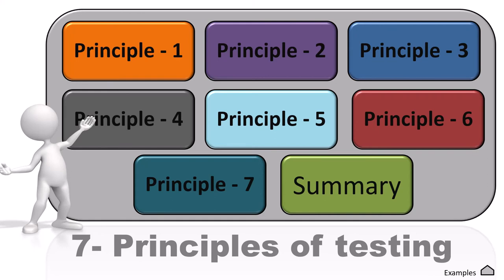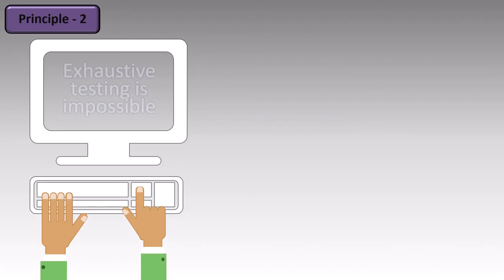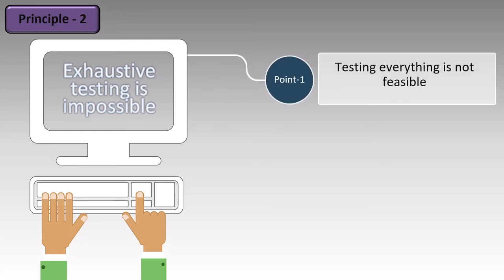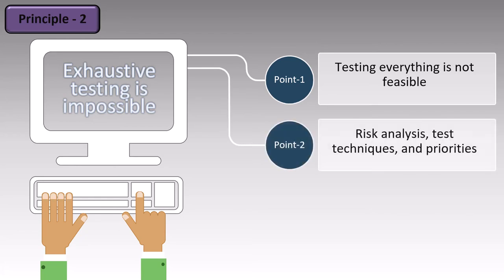Now we will cover the second principle of testing. Principle 2 says that exhaustive testing is impossible. Testing everything is not feasible. Just because we have software doesn't mean we can test every single bit of it. Whenever we do testing, it has to depend on risk analysis — what is the risk of that particular system? Depending upon that, we have to see what kind of testing is required.